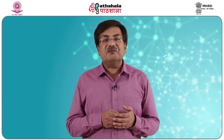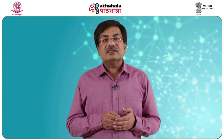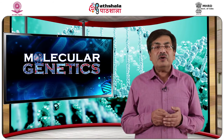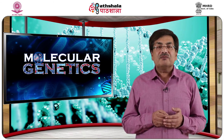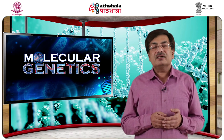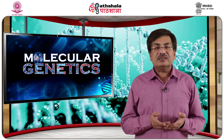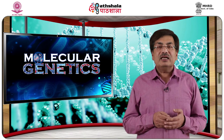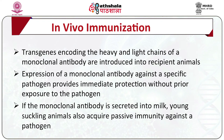Transgenic animals have also been developed for resistance to infectious diseases. Target diseases for production of transgenic disease-resistant livestock include mastitis (mammary gland abscess) in dairy cattle, bovine spongiform encephalopathy (BSE, or mad cow disease) in cattle, and neonatal scours (dysentery) in swine. One approach for disease resistance is in vivo immunization, in which a transgene encoding the heavy and light chains of monoclonal antibodies is introduced into recipient animals. Expression of monoclonal antibodies against a specific pathogen provides immediate protection without prior exposure to the pathogen. If the monoclonal antibody is secreted into the milk, suckling animals also acquire passive immunity against the pathogen.